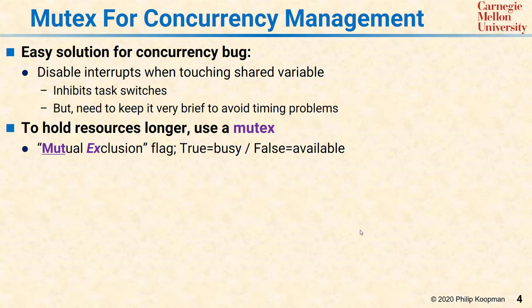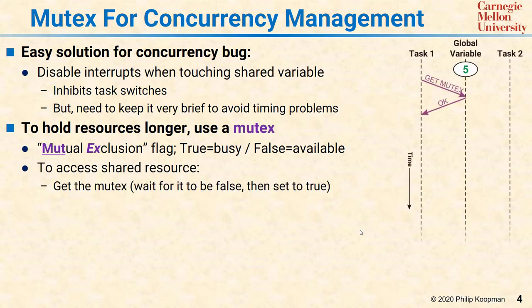To solve the problem we saw on the previous slide, to access this shared resource in a safe way, you first get the mutex. The global variable is 5, task 1 gets the mutex, and the mutex happens to be free so it gets back OK — the mutex is false. When it does that, it sets it to true, so everyone else knows the mutex is true and the global variable is taken. It does the read and adds one, so task 1 is at 6.